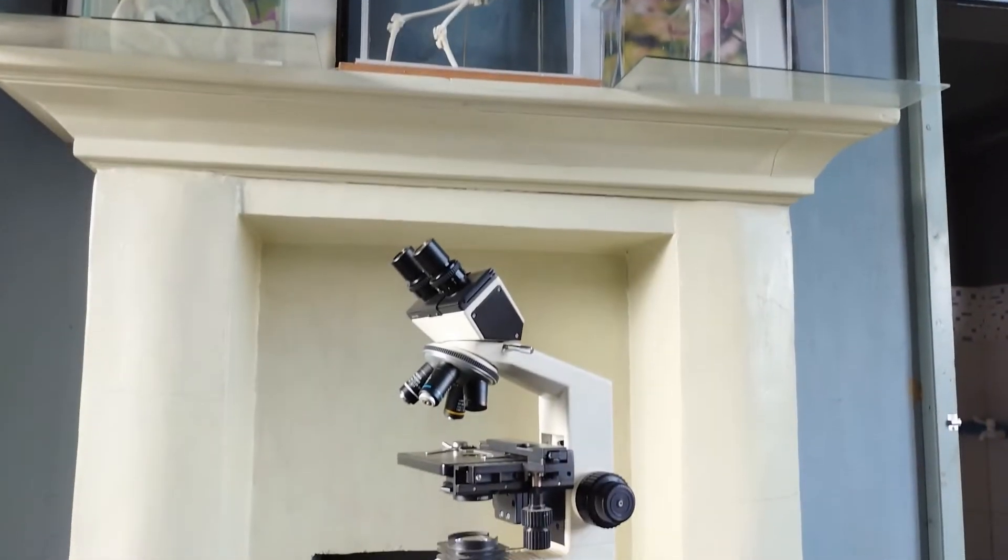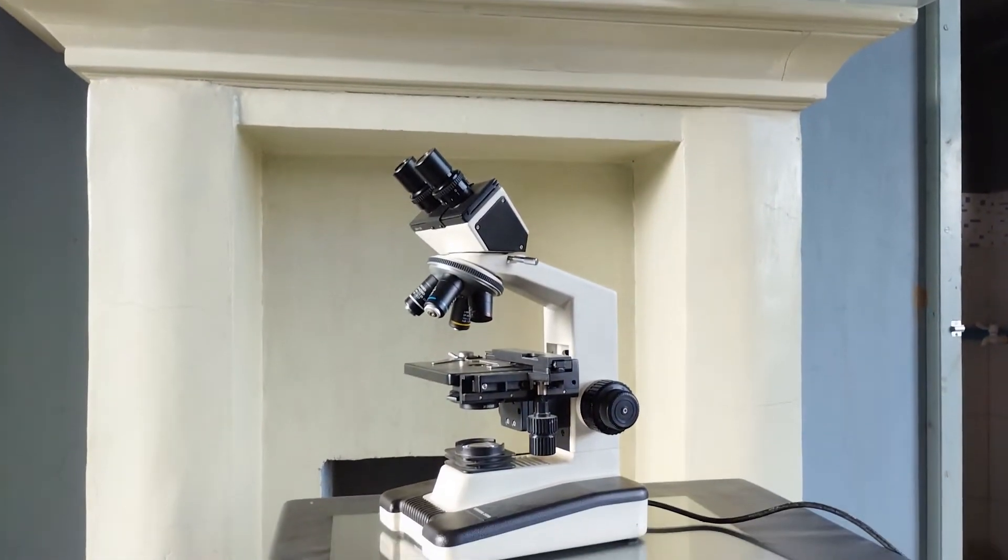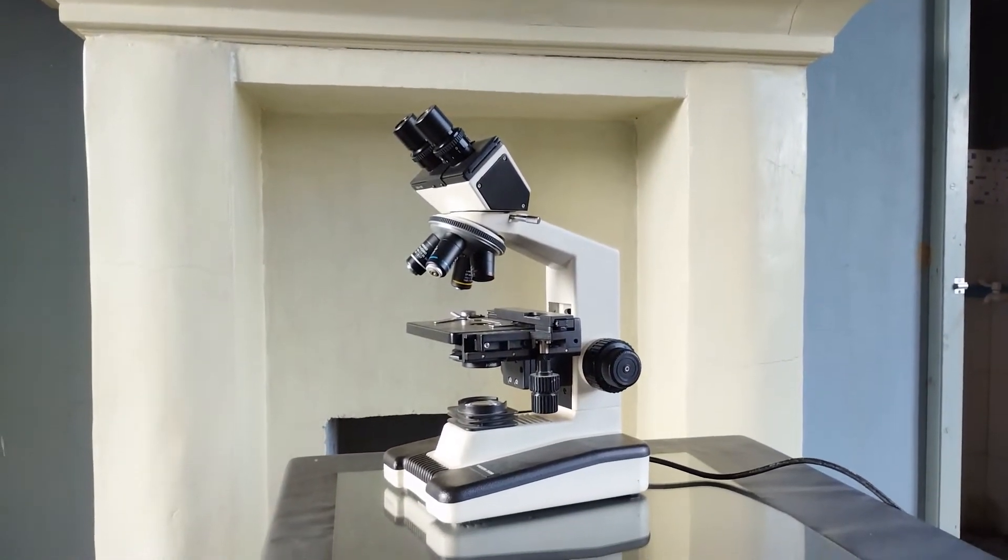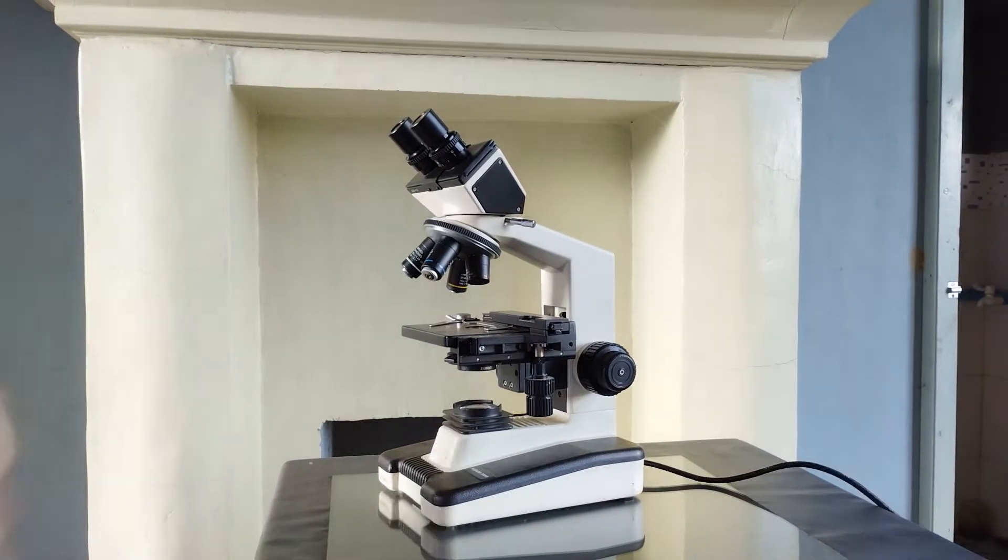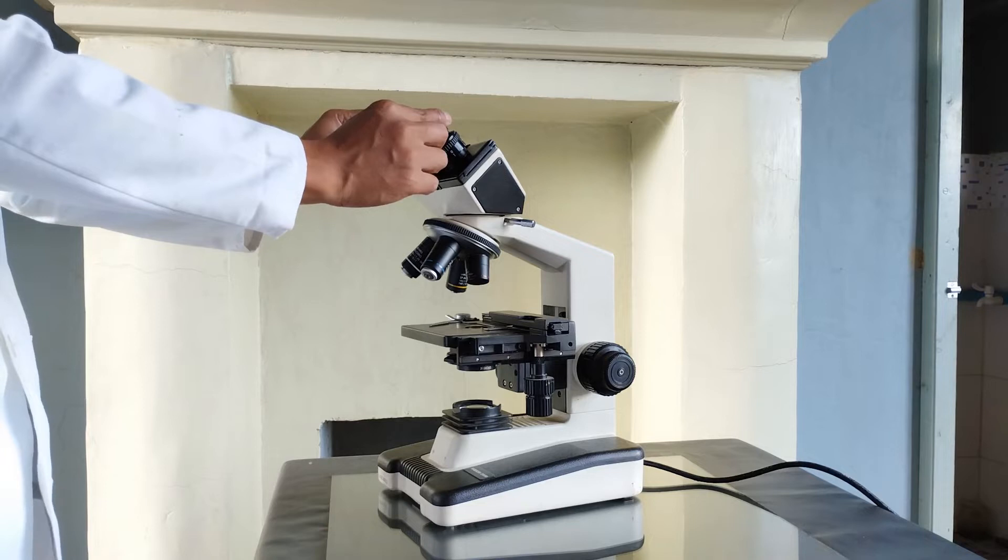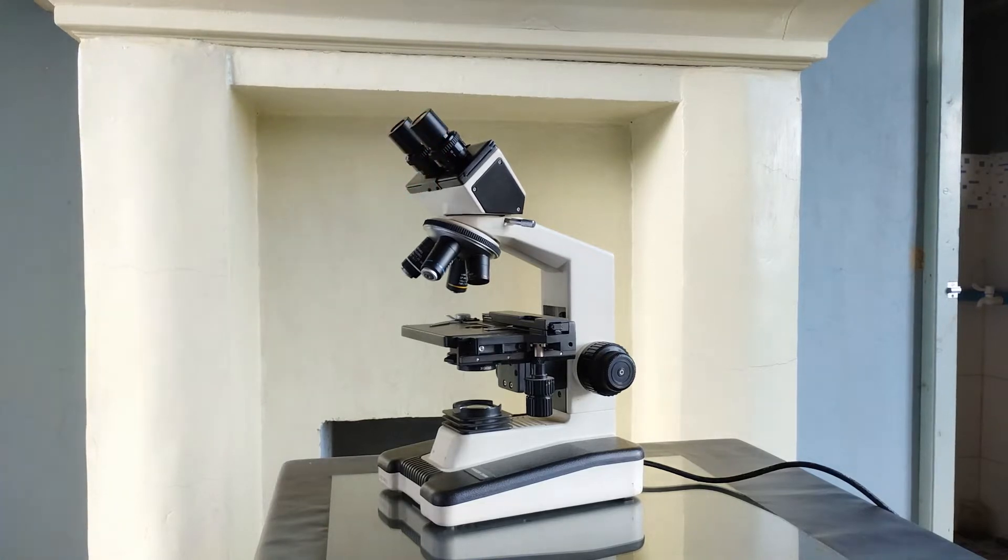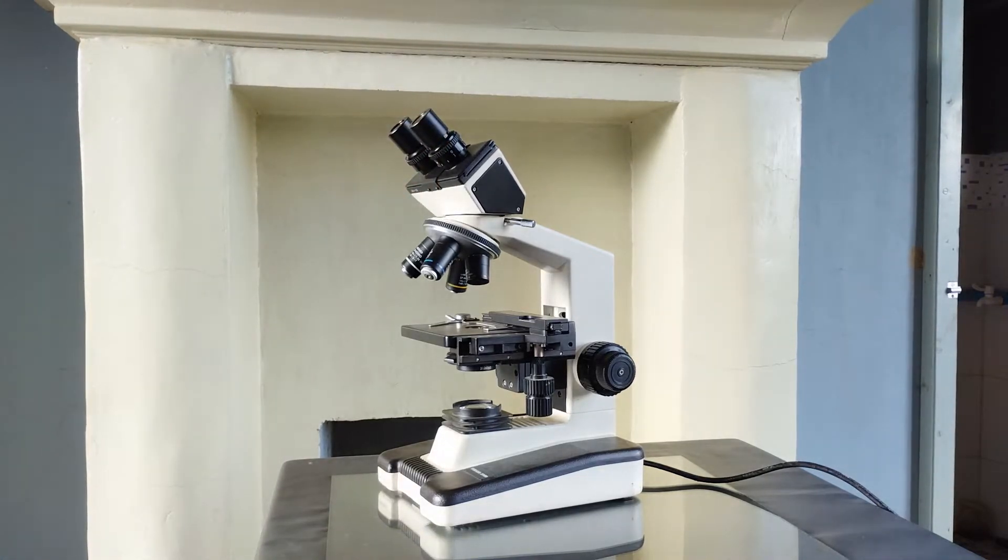The binocular light microscope is a more advanced and sophisticated design of the brightfield light microscope. It gets its name from the fact that it is equipped with two eyepieces, both of which are simultaneously used to give the user a stereoscopic viewing experience of the specimen image. The usage of the binocular light microscope is overall the same as that of a monocular light microscope, albeit with a handful of differences.